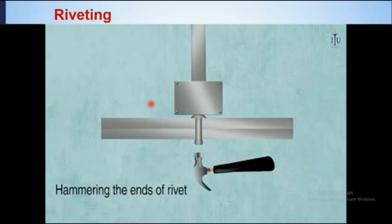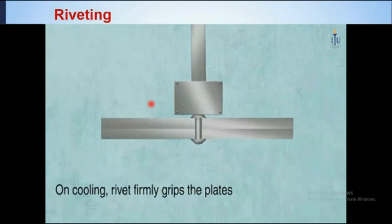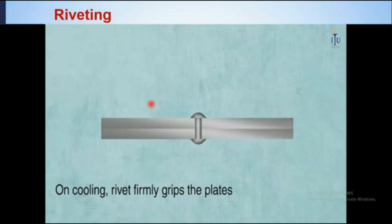When the temperature of the rivet decreases, the rivet contracts, and by this way it holds both the plates tightly with each other.